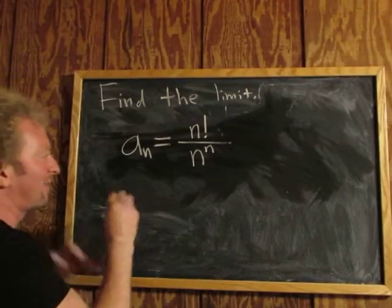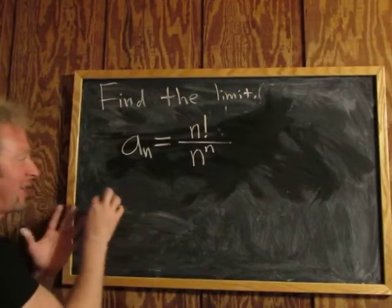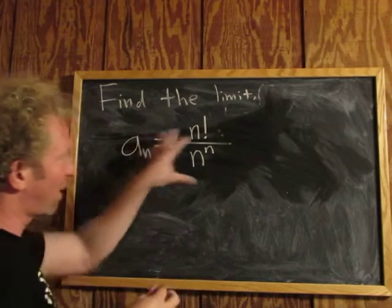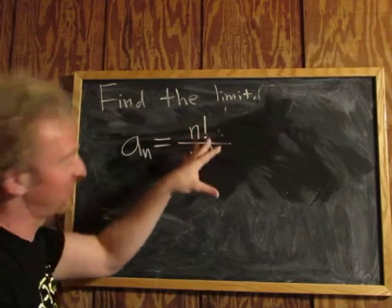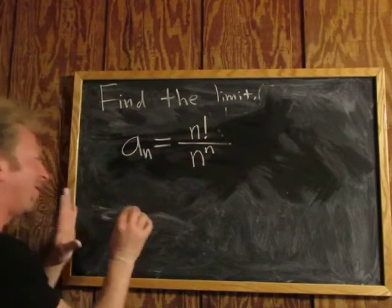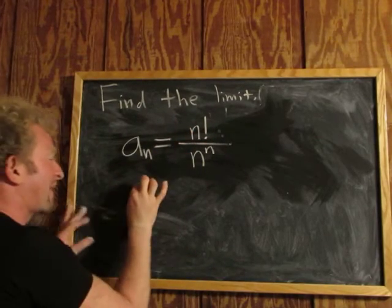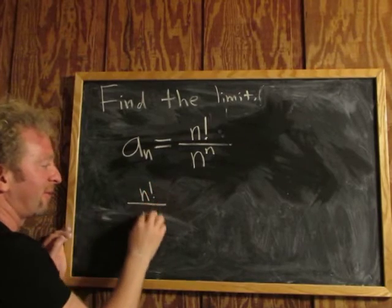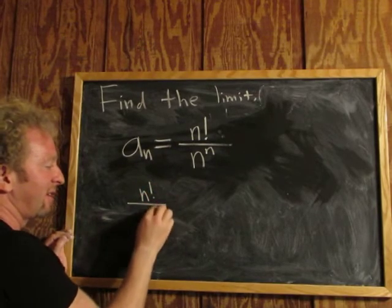What's happening here is we're going to let n go to infinity and we're asking ourselves what happens to the terms of the sequence. Well, if you think about it like this — n factorial over n to the n.